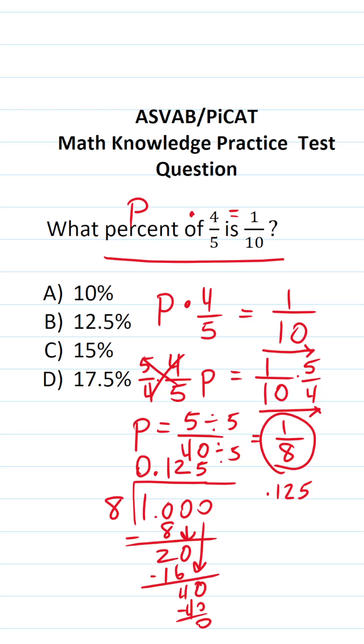To convert this decimal to a percent, just take your decimal and move it one, two times to the right. This becomes twelve point five percent, which is the answer choice B. In other words, one-tenth is twelve point five percent of four-fifths.